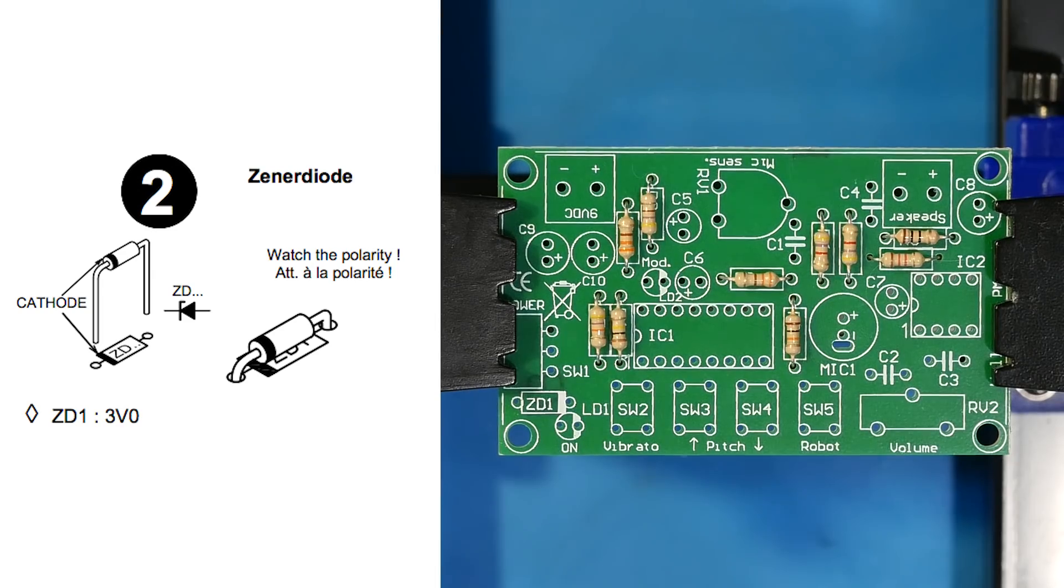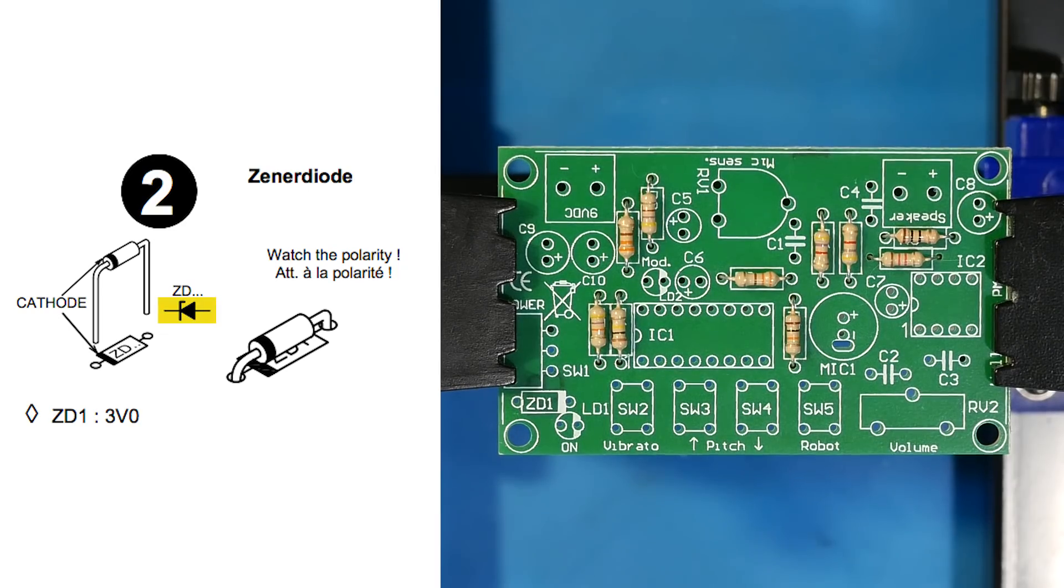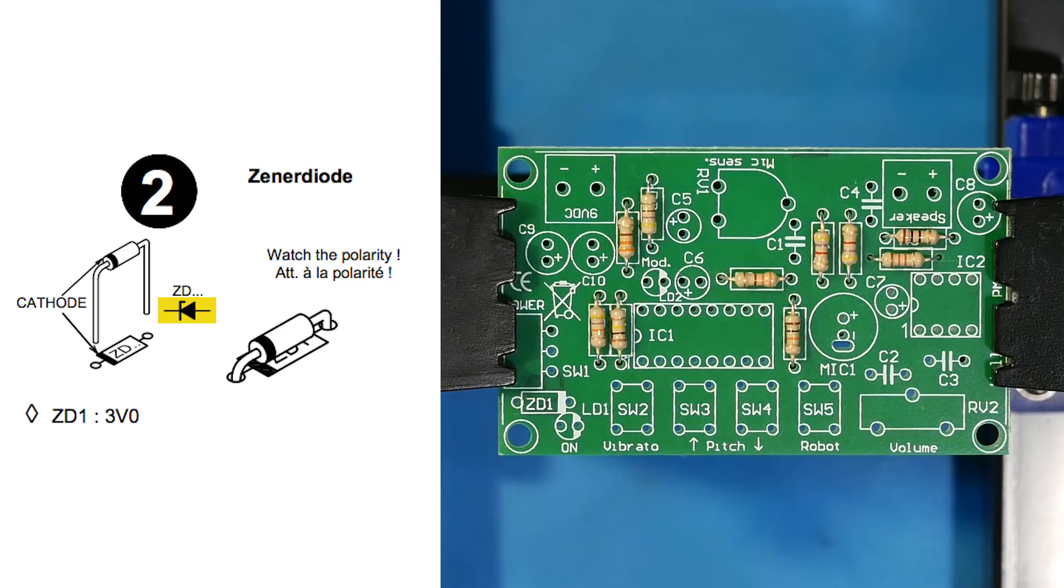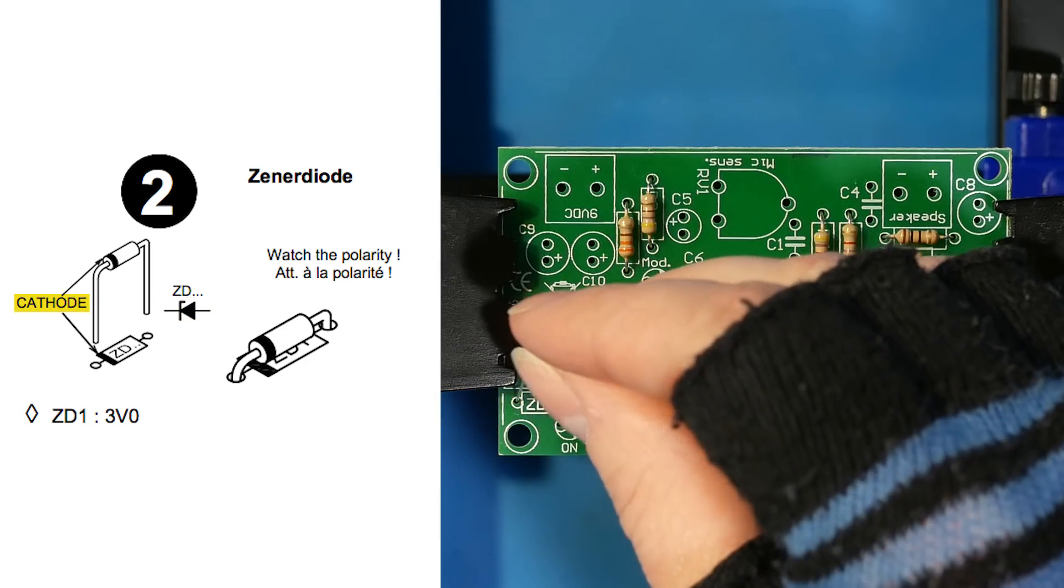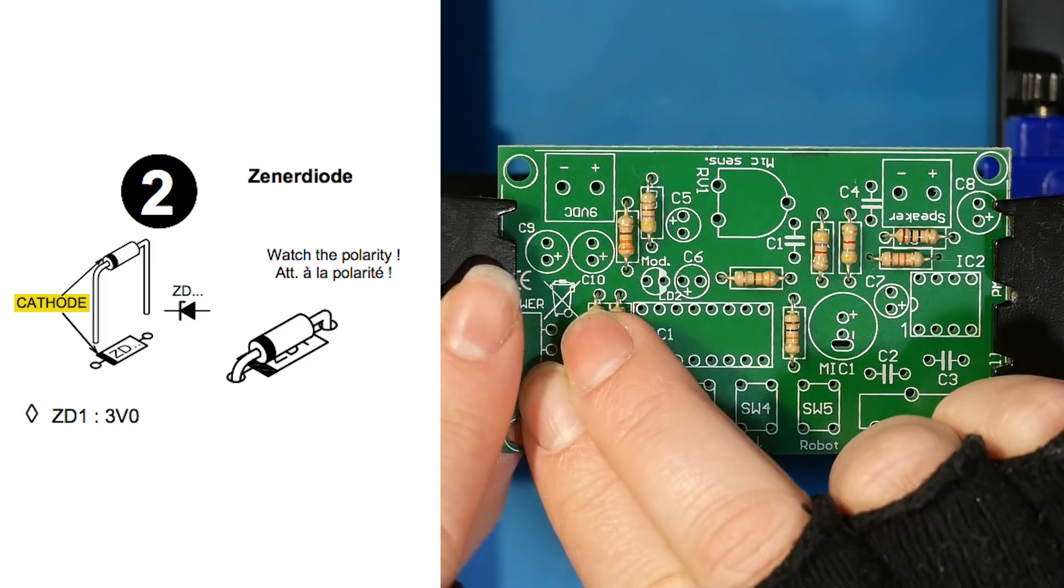In step two, we place the diode in slot ZD1 on the PCB. If you look at the symbol, you'll notice it's a Zener diode. Remember, when you place the diode, you want to make sure that the cathode, the end with the line, matches up with the line on the symbol and the placement on the PCB.